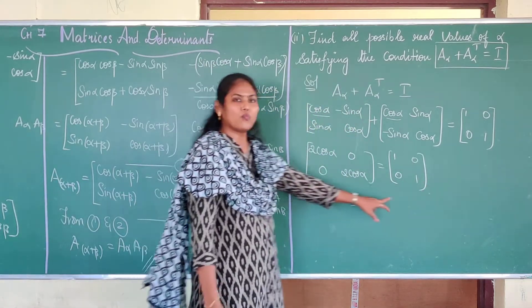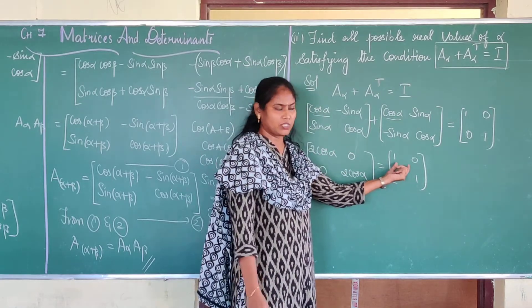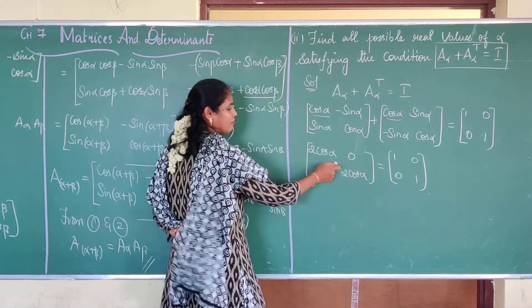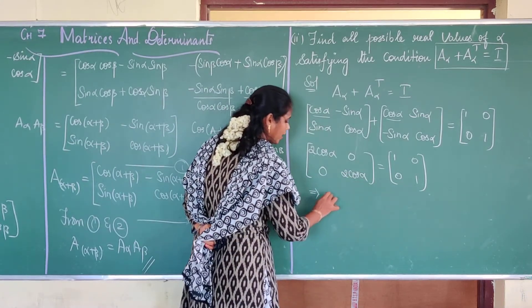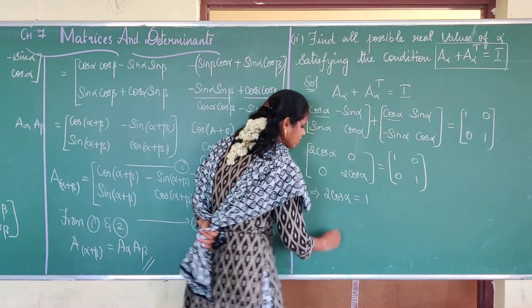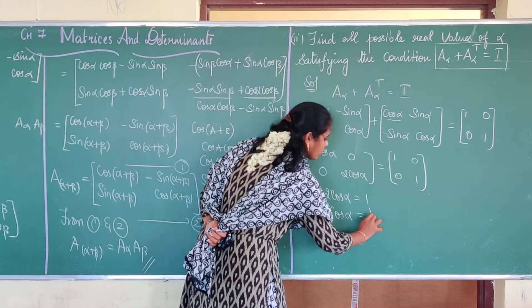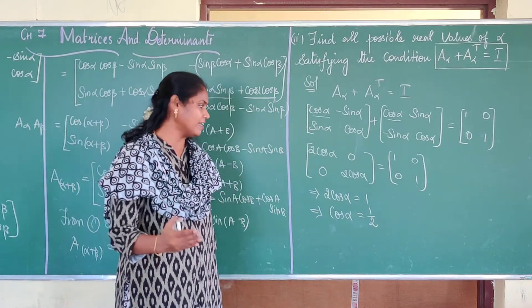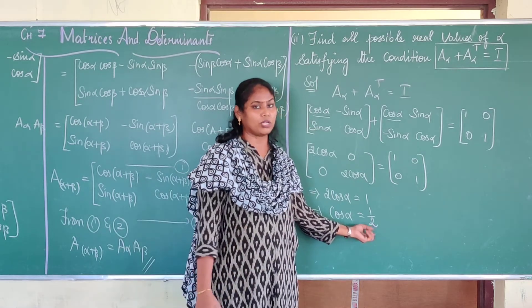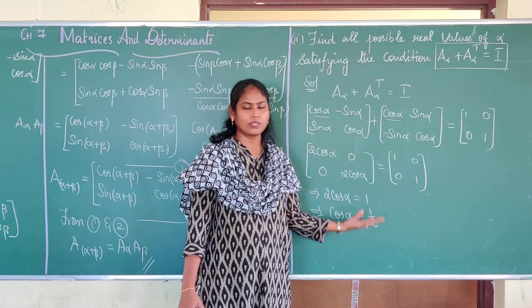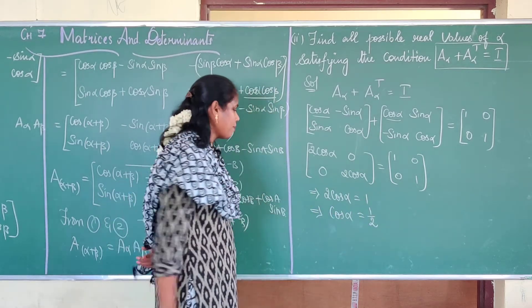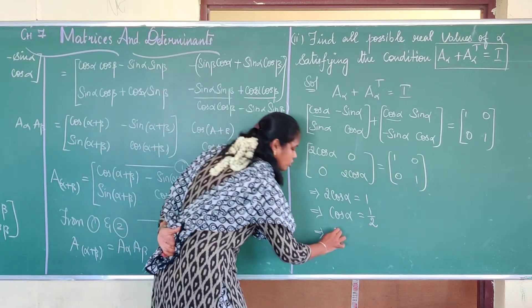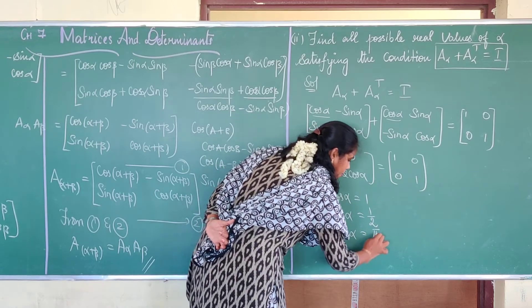These two matrices are equal, so I can equate corresponding terms. The diagonal gives 2 cos α = 1, which implies cos α = 1/2. From the trigonometric table you learned in 10th standard, when is cos equal to 1/2? At 60 degrees — that is, cos(π/3) = 1/2. And π/3 in radians is nothing but 60 degrees.